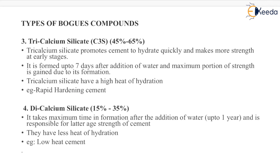Next is dicalcium silicate, whose percentage varies between 15% to 35%. It takes maximum time in formation after the addition of water, up to 1 year, and is responsible for later age strength of cement. It has less heat of hydration. An example is low heat cement.